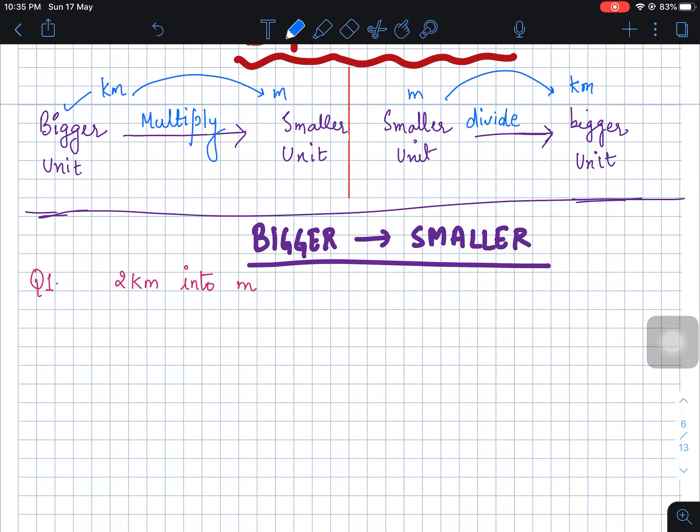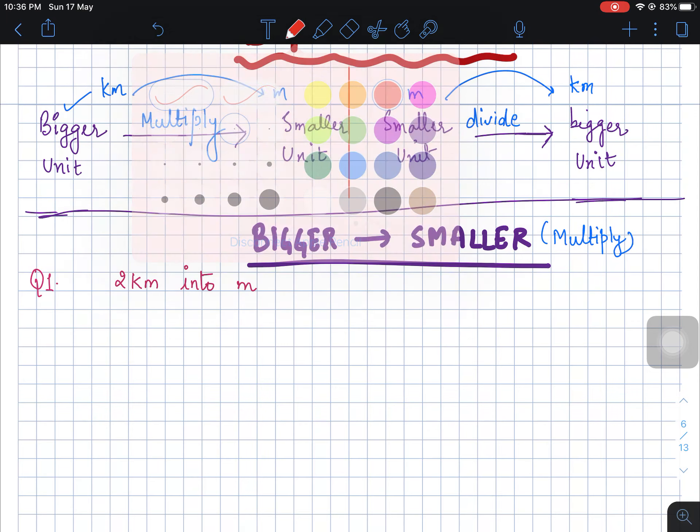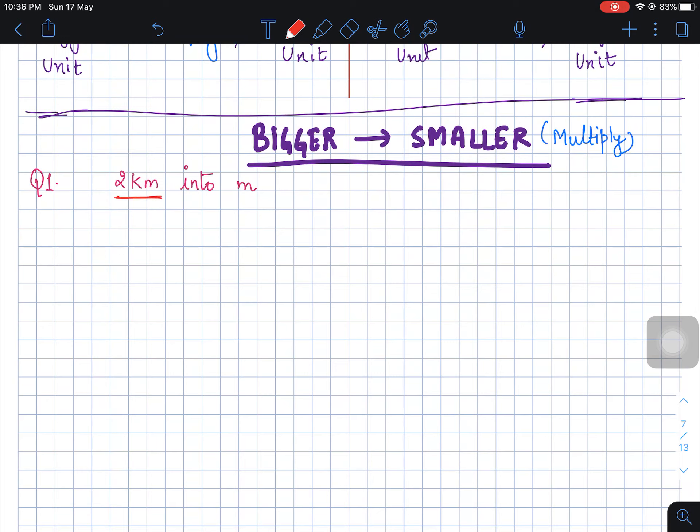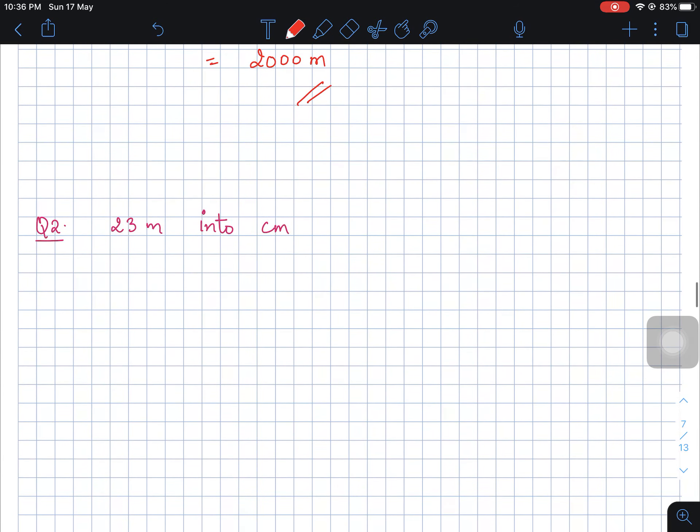So let us do the first one, bigger unit to smaller unit where we have to multiply. Let us start with a few examples. I am given 2 km and I have to convert this into m. First write the basic conversion: 1 km is equal to 1000 m. So 2 km will be equal to 2 times 1000 m, so you get the answer as 2000 m.